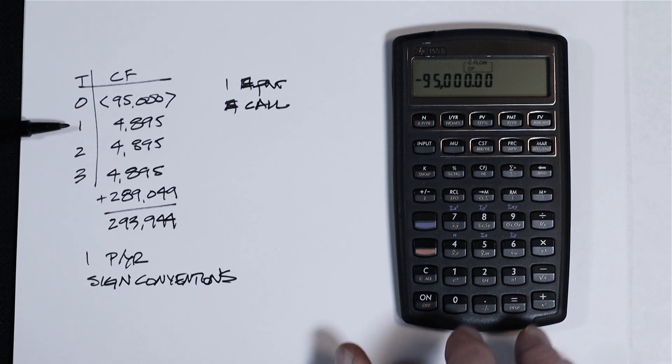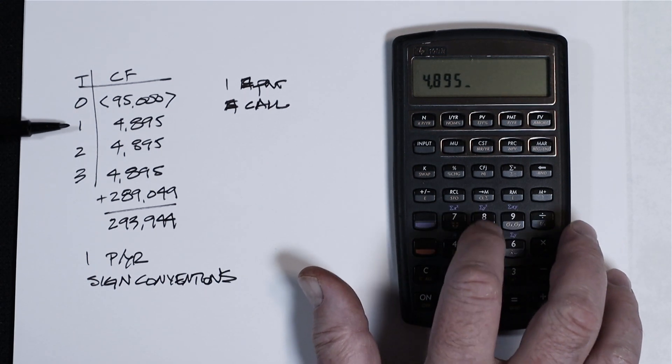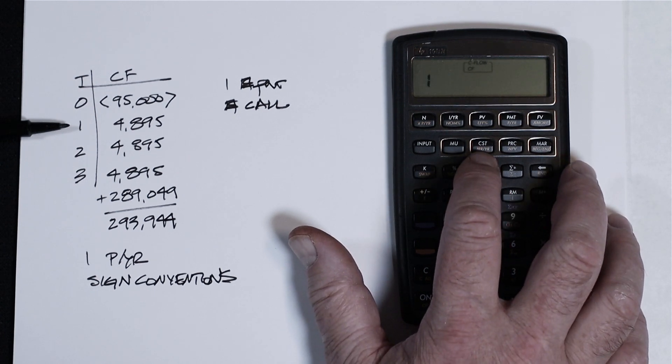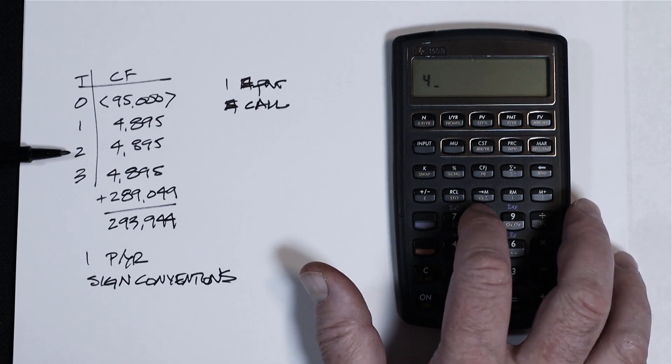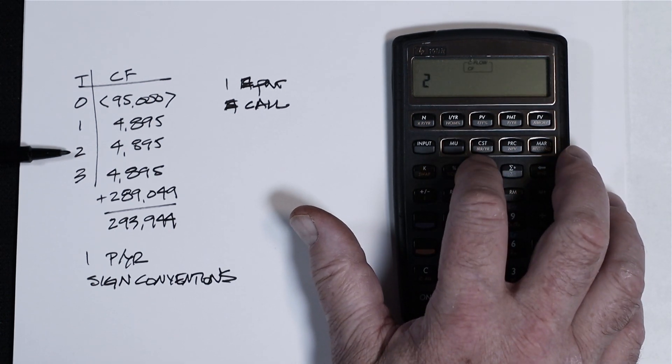Next flow at time period one, $4,895, press the same CFJ button, that's one. Do the same thing for time period two, CFJ.